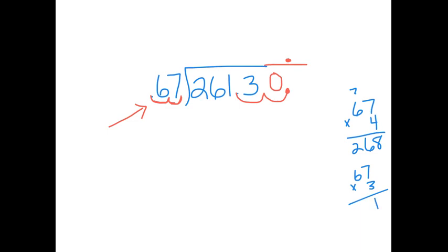67 times 3, 18, 19, 20. So that's 201. Okay, so I put my 3 above the 1. We multiply, 3 times 67, we get 201. Go ahead and subtract.